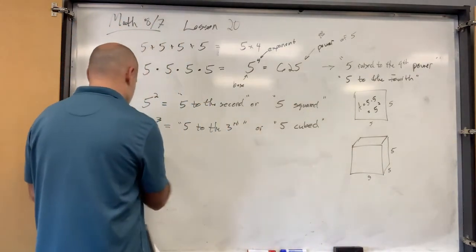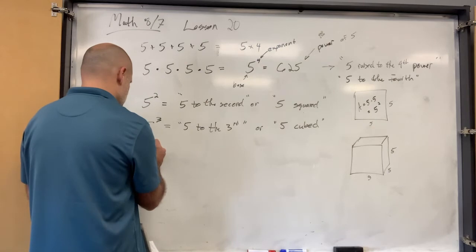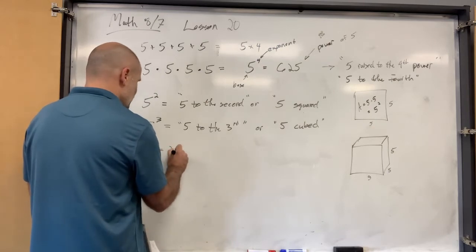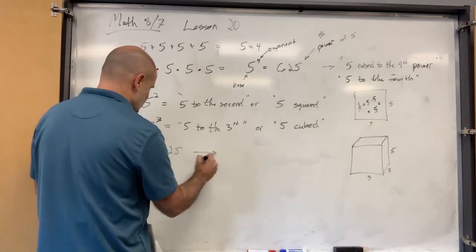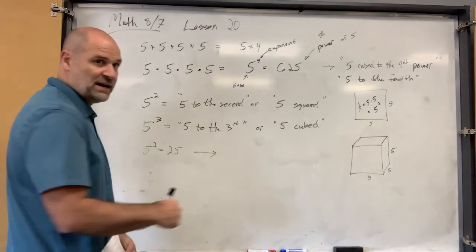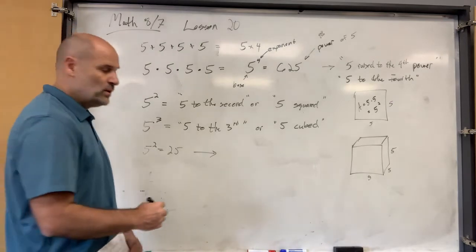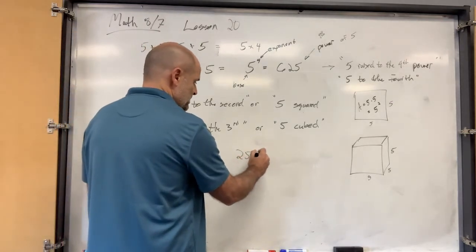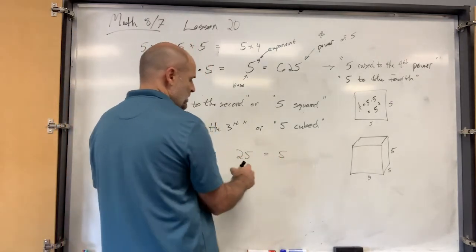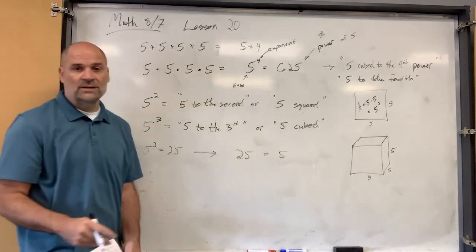Five squared equals 25. How do you go from 25 back down to 5? What operation do you do?